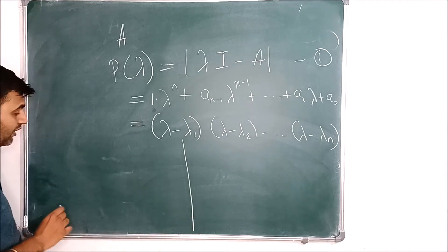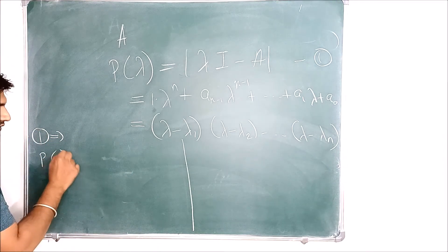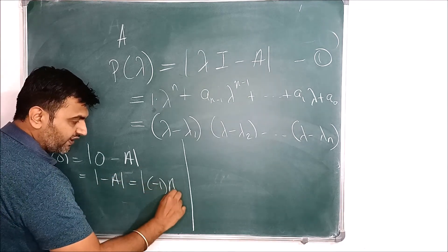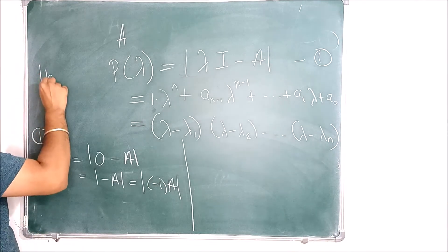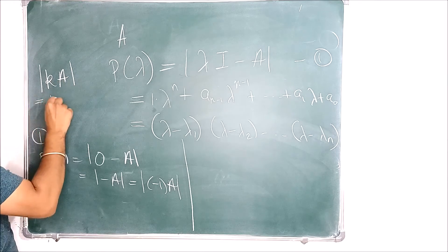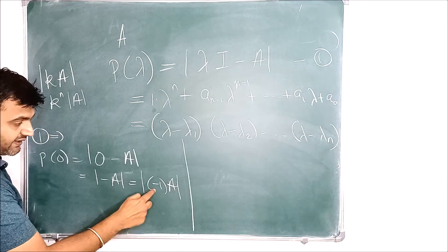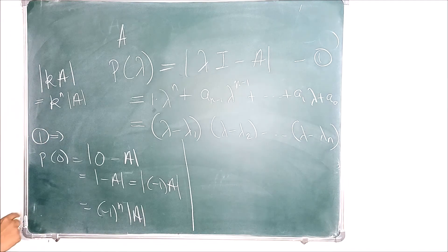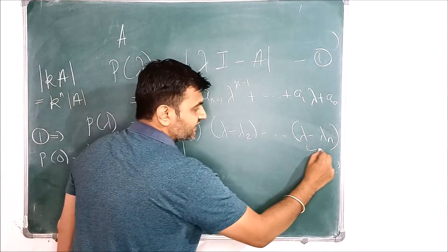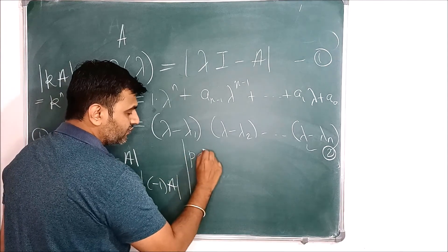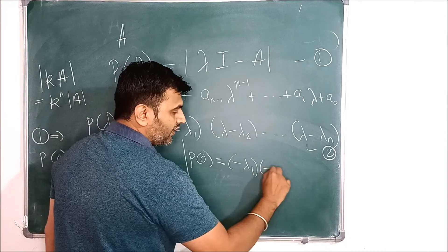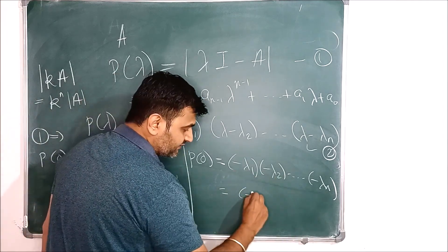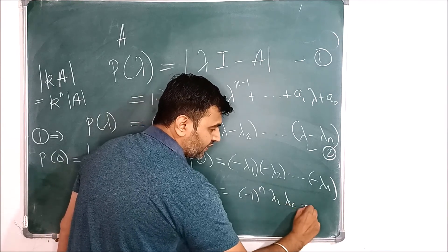Now observe smartly: equation 1 implies P of 0 equals determinant of (0·I minus A), which is the determinant of minus A, which is the determinant of (−1 times A). By the property of determinants, the determinant of a scalar k times a matrix of order n×n equals k raised to n times the determinant of A. So with k = −1, this gives (−1)^n times determinant of A. Now doing the same with equation 2: P of 0 equals (0 − lambda_1)(0 − lambda_2)...(0 − lambda_n), which equals (−1)^n times lambda_1 times lambda_2 ... times lambda_n.